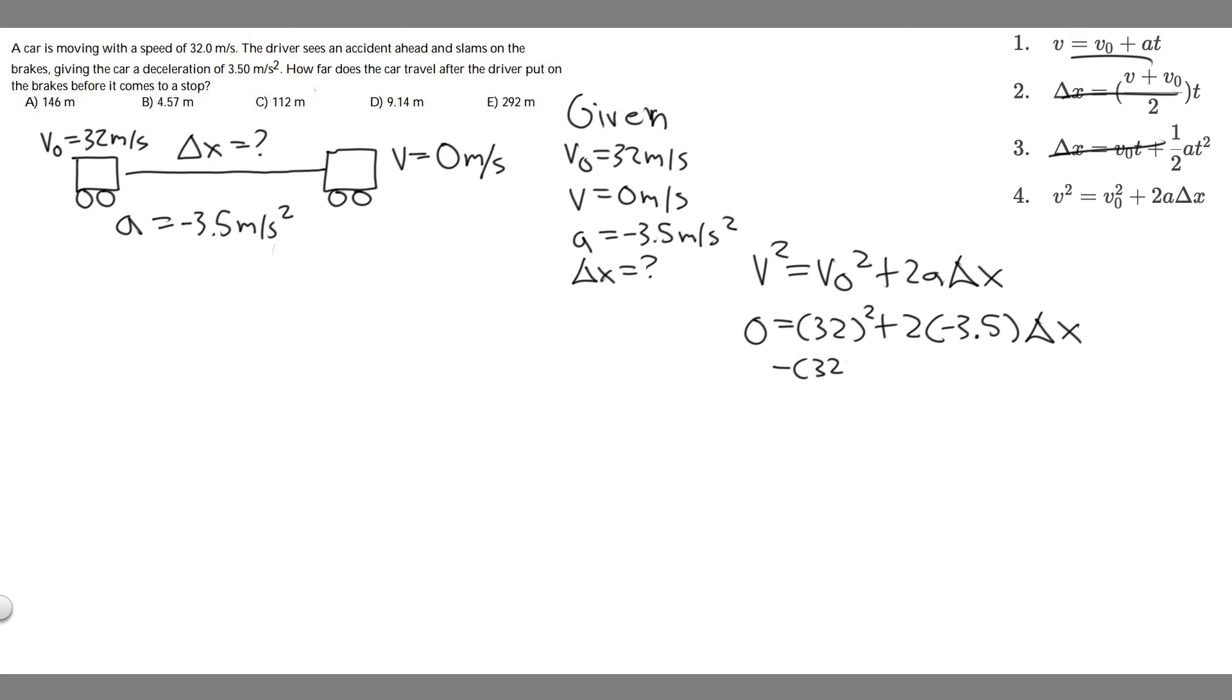If we move 32 squared to the other side, subtracting it, you'll get minus 32 squared is equal to 2 times minus 3.5, that's just minus 7. So minus 7 times delta x, divide by minus 7. Notice these signs are going to cancel, and it's going to become positive. So it makes sense that it's positive, because a distance has to be positive. You can't have a negative distance. That doesn't make sense.